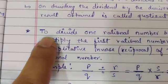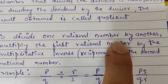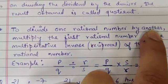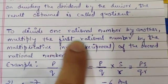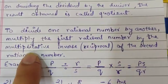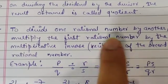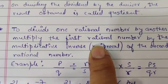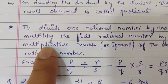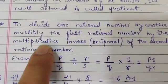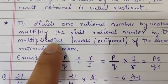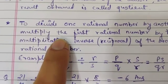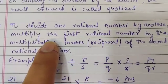To divide one rational number by another — अगर हम किसी एक rational number को दूसरे rational number से divide करते हैं — we multiply the first rational number by the multiplicative inverse of the second. तो हम उसको indirectly multiply कर रहे होते हैं उसके multiplicative inverse से — किसके? जो second rational number है, यानि कि जो divisor है हमारा, उसके multiplicative inverse से हम dividend को multiply कर रहे होते हैं।